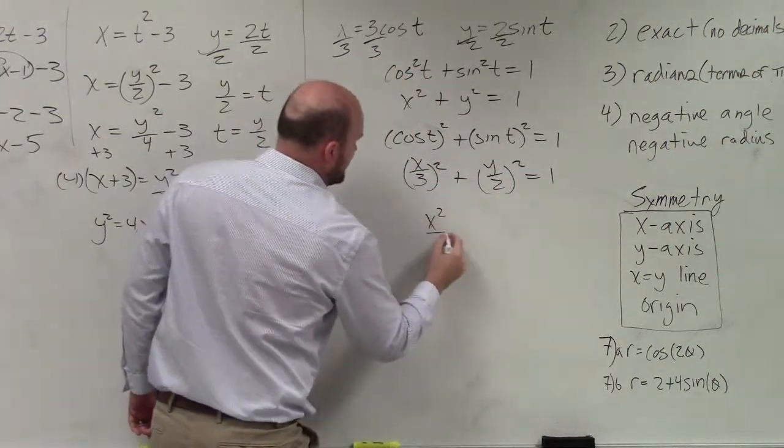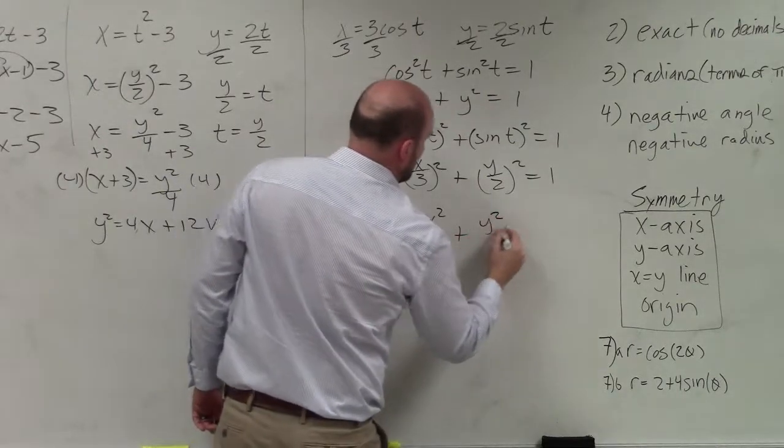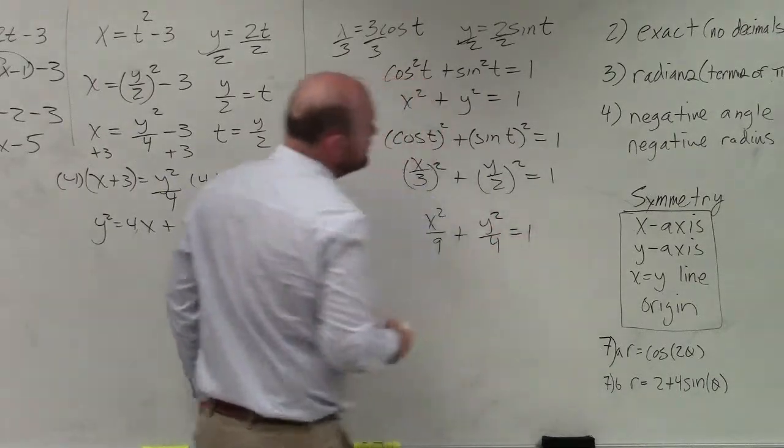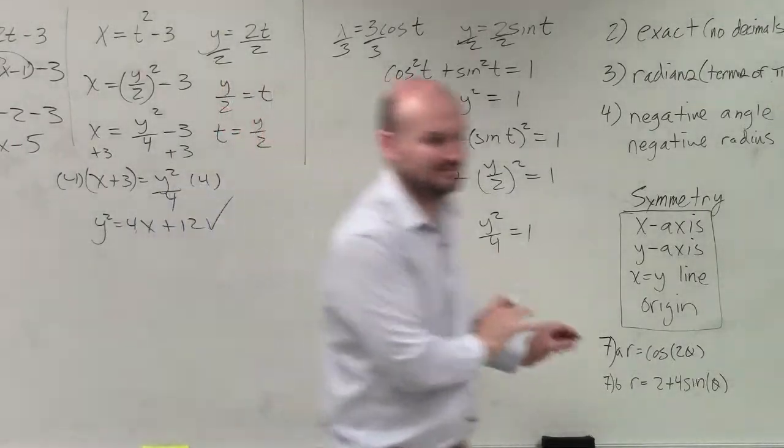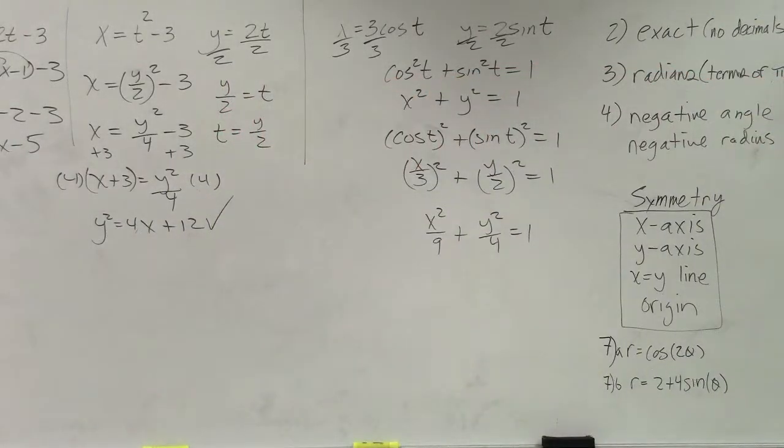So therefore, that's x squared over 9 plus y squared over 4 equals 1. And we'll just leave it like that. That's perfectly fine. We are going to learn, or if you remember from last year, we'll talk about what that graph or what that equation represents.